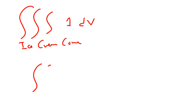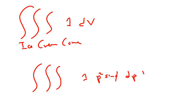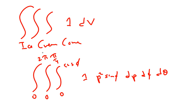In spherical coordinates, there's always a correction factor. So we have the 1 here, but the correction factor is rho squared sine phi. We integrate in the order d rho, d phi, d theta. Rho goes from 0 to cosine phi, phi goes from 0 to pi over 4, and theta goes from 0 to 2 pi. So this integral is not looking too bad.